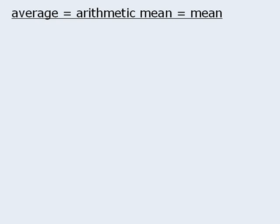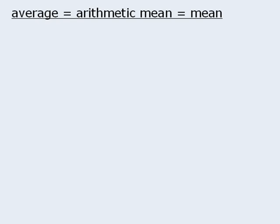Now the average is also referred to as the arithmetic mean, or simply the mean. So in this module, we will use these three terms interchangeably. To find the average of n numbers, we calculate the sum of the n numbers, and then divide this by n.